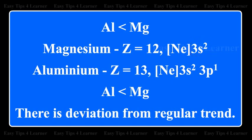Thus, the first ionization energy of aluminium is lower than that of magnesium.